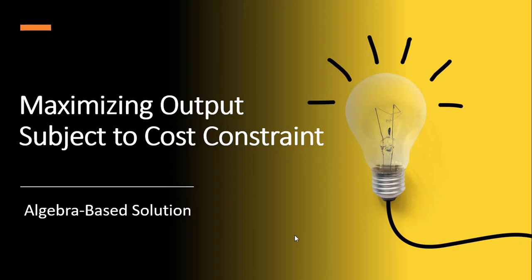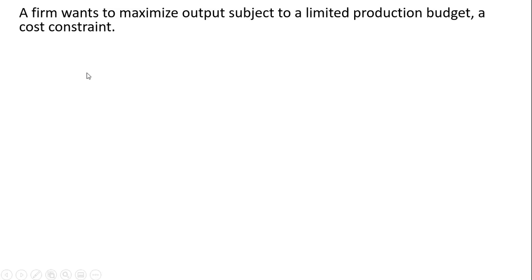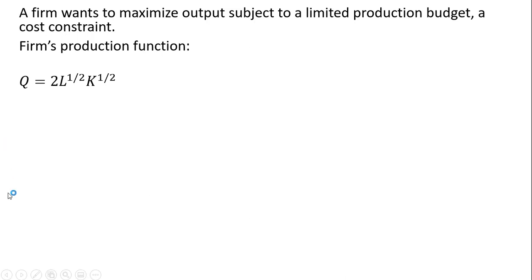Hello. In this video, we're going to maximize output subject to a cost constraint. A firm wants to maximize output subject to a limited production budget. We're given the firm's production function: Q, the quantity of output, equals the following, where L is units of labor and K represents units of capital.